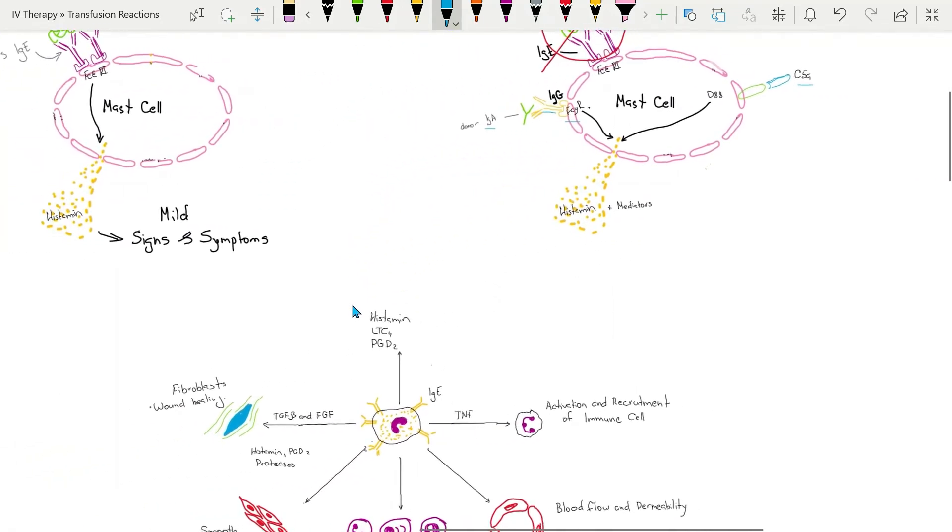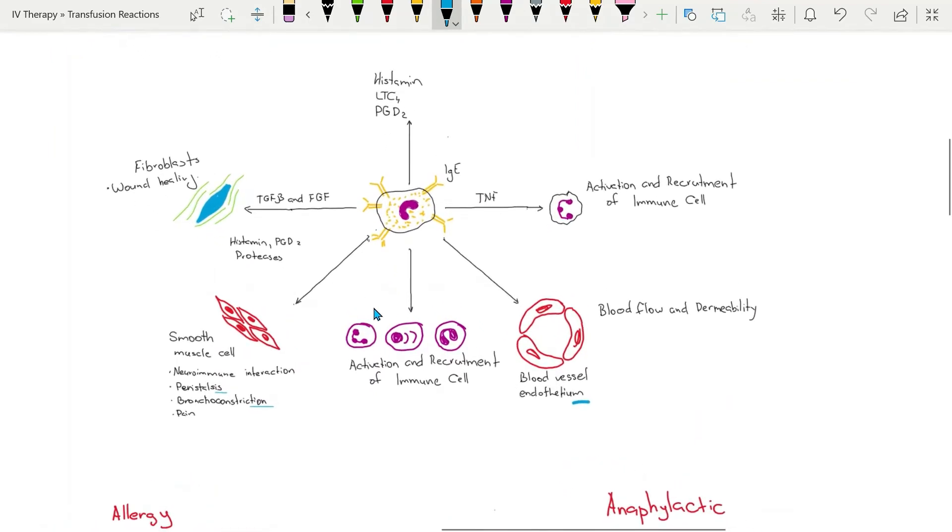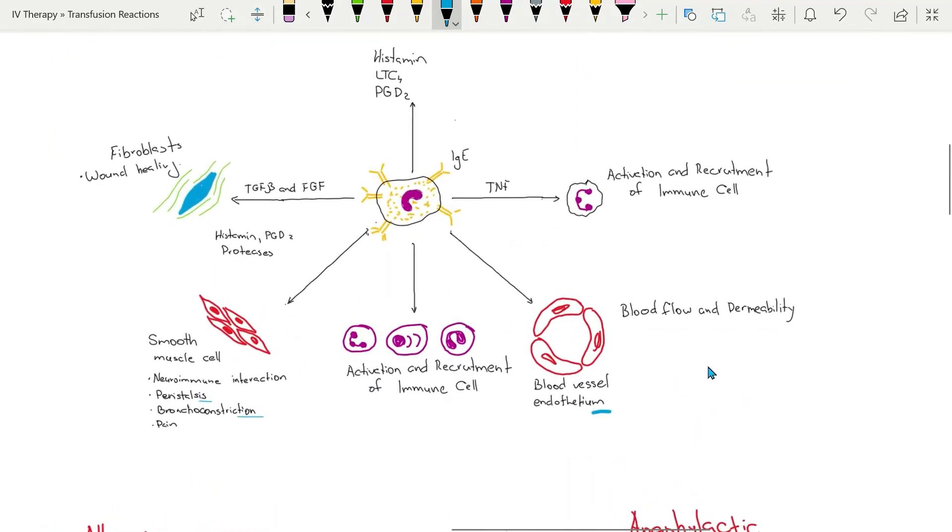This is what the mast cell can do: blood vessel endothelium is activated and smooth muscle cells are activated.